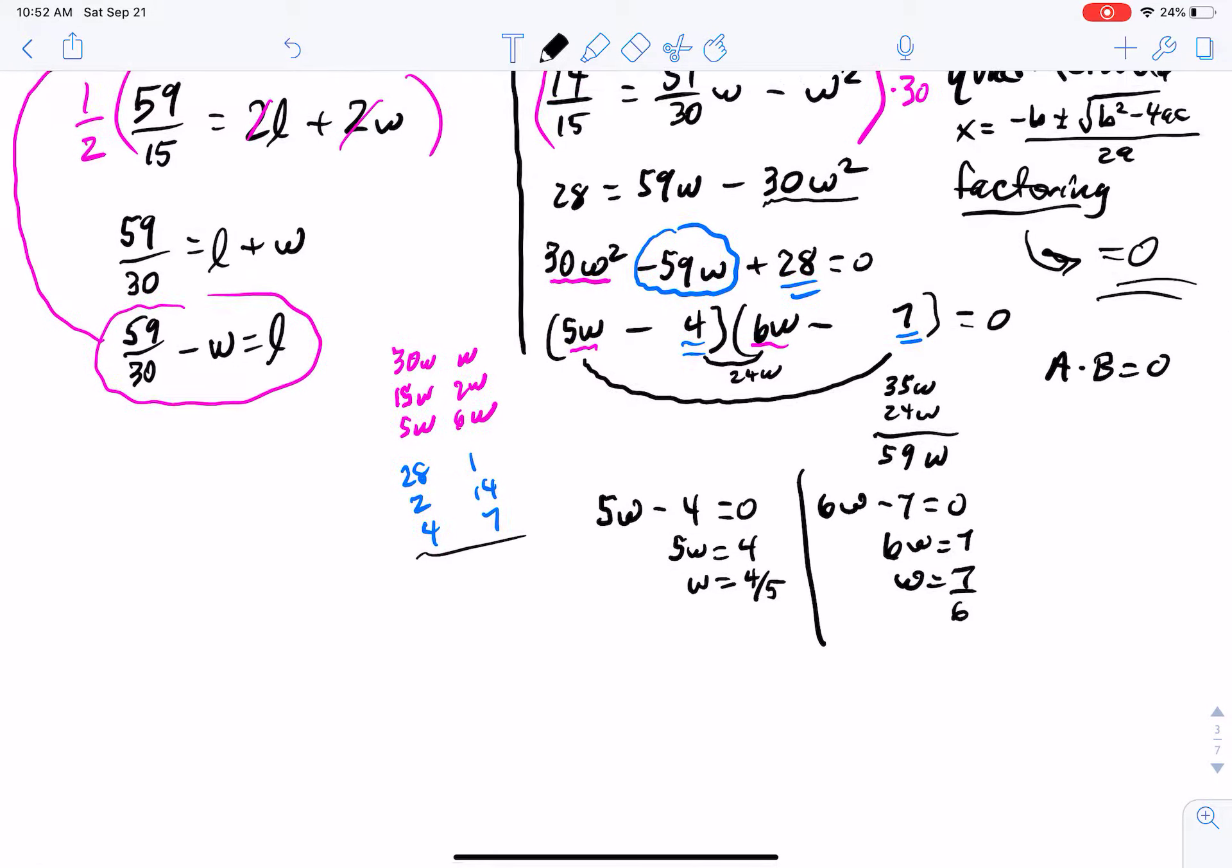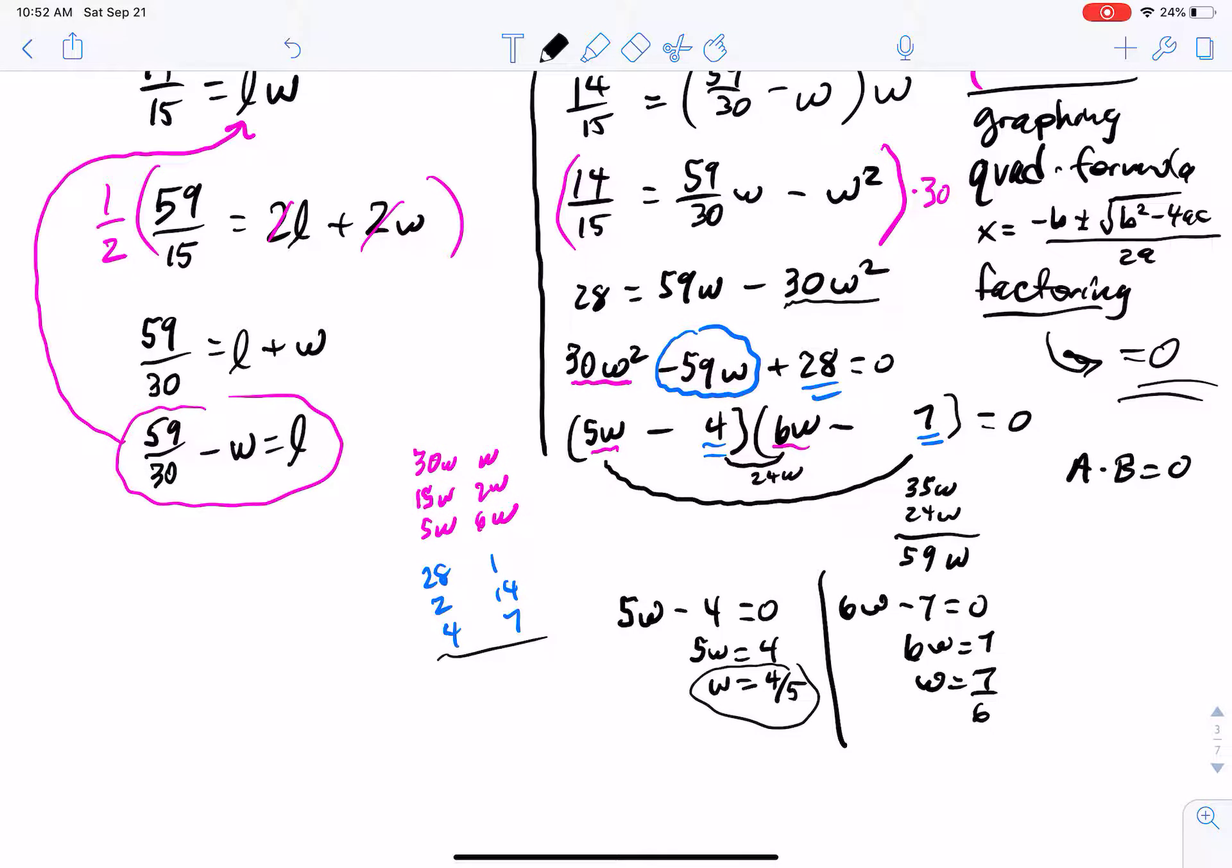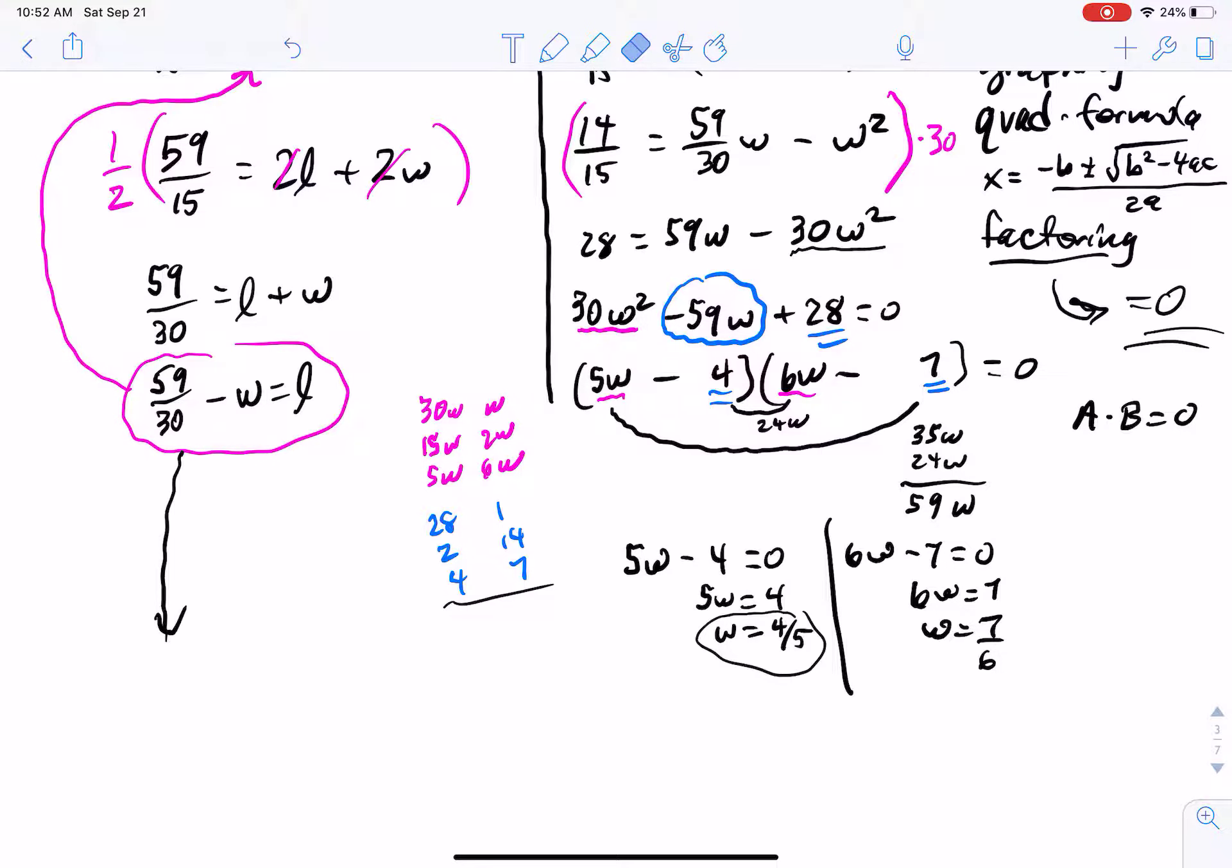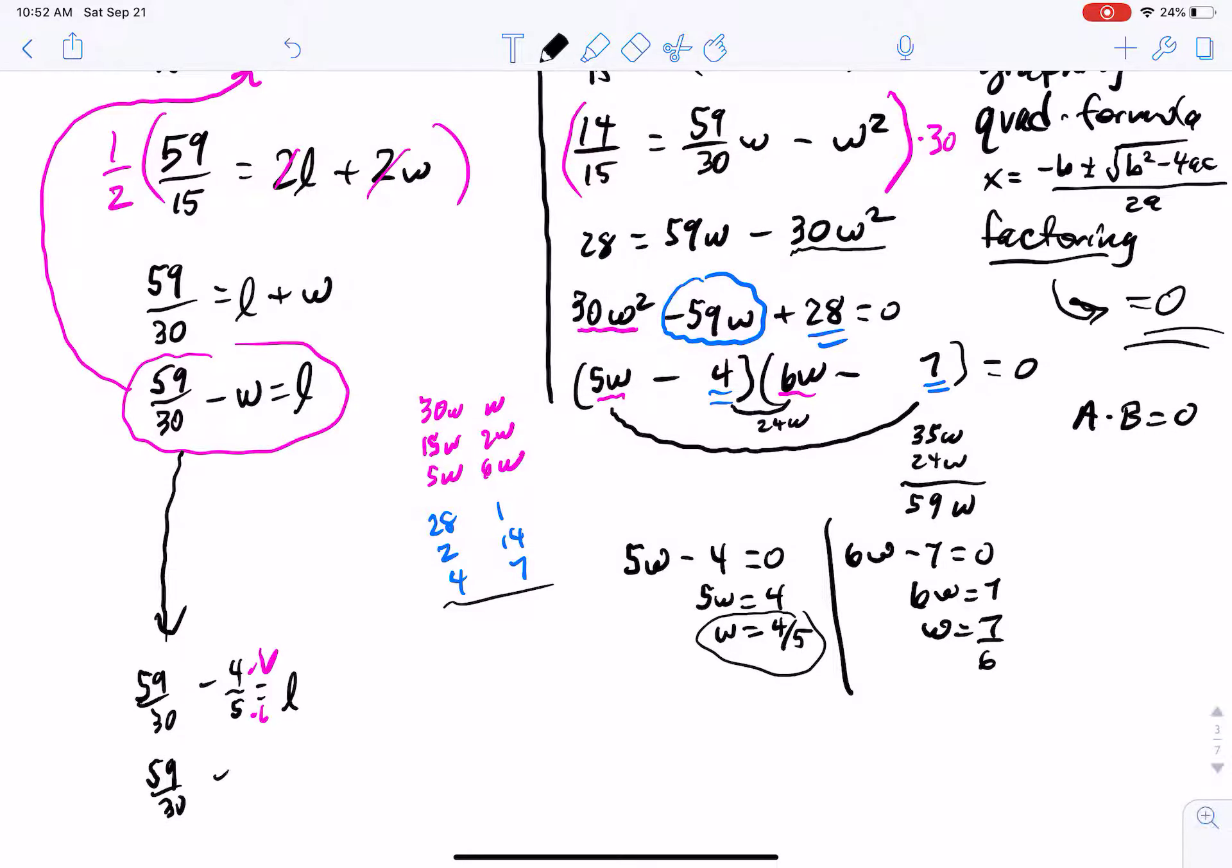So let's say, for example, that we chose this first one that w is equal to 4 fifths. So let's go back to one of our equations here, namely this one. And then check to see what the length is supposed to be if this is the width. So I would have 59 over 30 minus 4 fifths is supposed to be equal to the length. If I subtract these, I need a common denominator. In order to get a common denominator here, that's going to be 30 because 5 goes into 30. I just have to multiply both the top and the bottom by 6. So times 6, times 6. And then I've got 59 over 30 minus 24 over 30 is equal to my length.